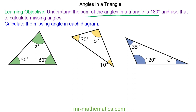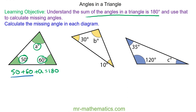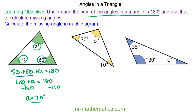So we have the three angles here: the 50, the 60, and angle A, and together they add to make 180 degrees. So we can add the 50 and the 60 together to get 110 degrees. Added to angle A will equal 180. So we can take away 110 from both sides and angle A will equal 70 degrees.